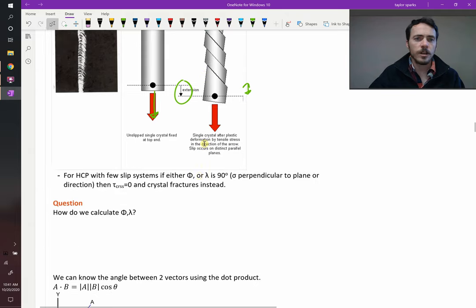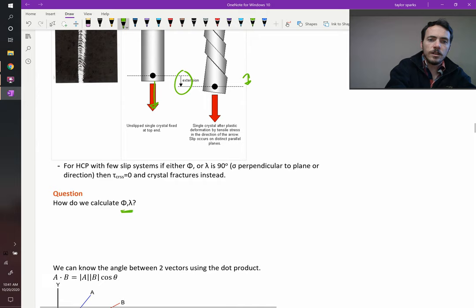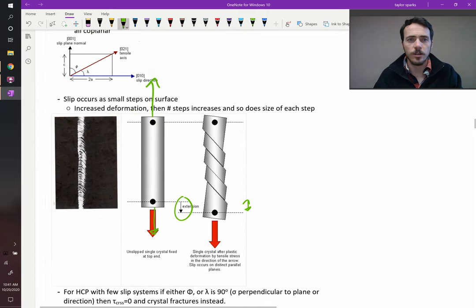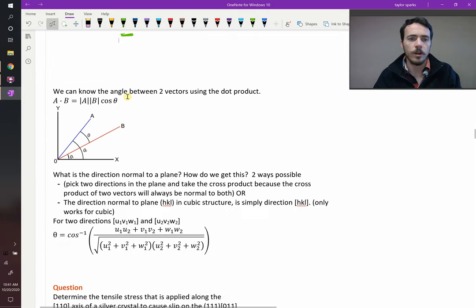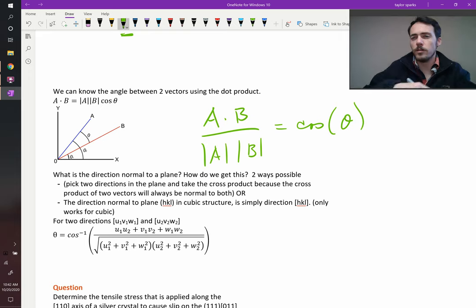So this is interesting. To do these sort of calculations, we're going to need to figure out what is phi and what is lambda. How do we calculate those based off of the directions in the crystal? Well, fortunately in trigonometry, you learned how to do this. If you've got two vectors, vector A and vector B, we can figure out the angle between them using the dot product. We know that A dot B divided by the length of vector A multiplied by the length of vector B is equal to the cosine of the angle between those two vectors.